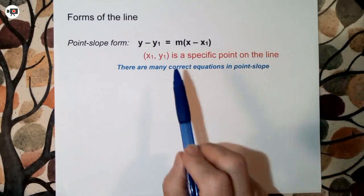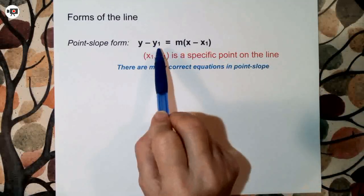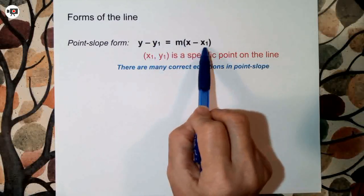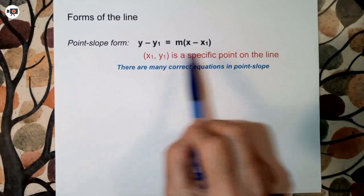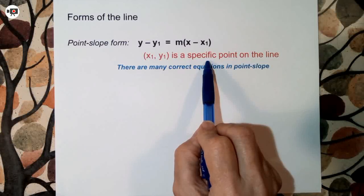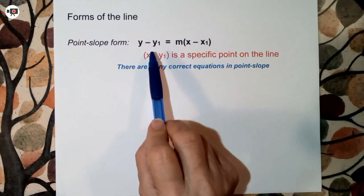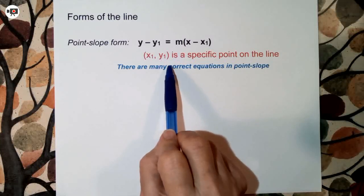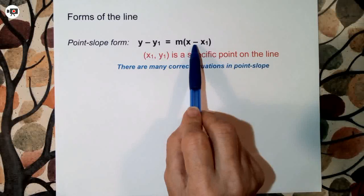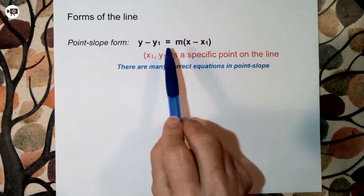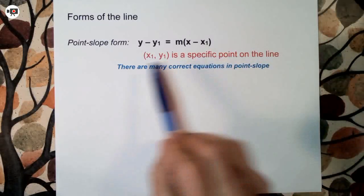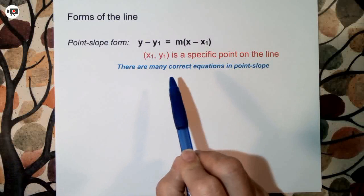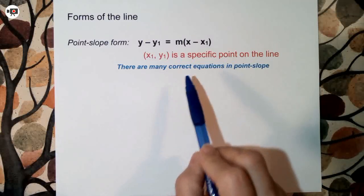The point you can see right here — the subscripts y-sub-1 and x-sub-1 — the opposite of them is the specific point on the line. Now this one's going to give you the most trouble because most of the forms have positives or plus. This has a negative, which means the actual form is going to be the opposite of what it looks like, until you get used to it — and then it won't be a big deal.